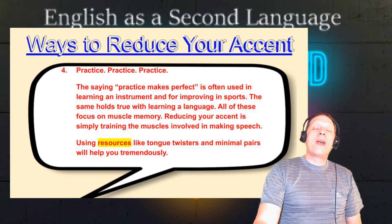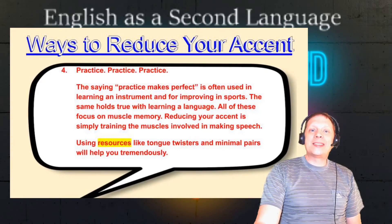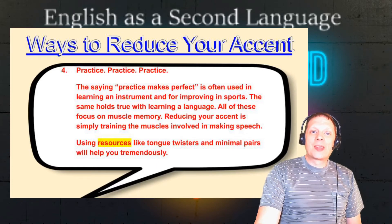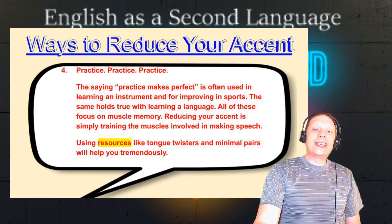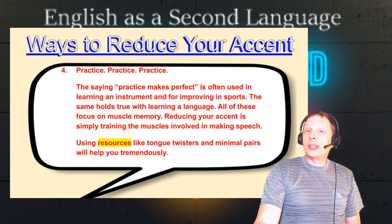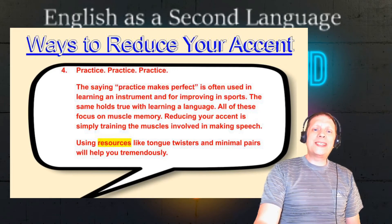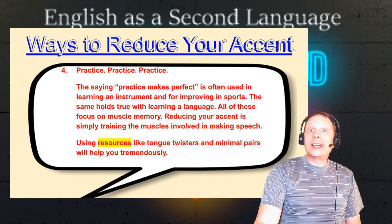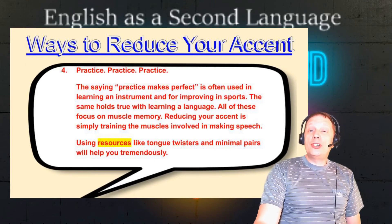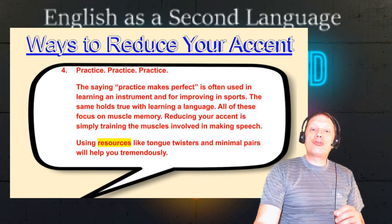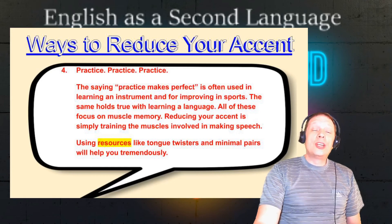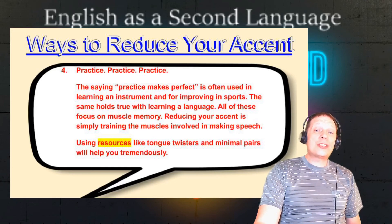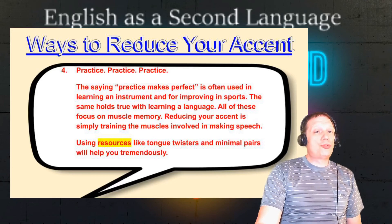Fourth tip: practice, practice, practice. The saying "practice makes perfect" is often used in learning an instrument and for improving in sports. The same holds true with learning a language. All of these focus on muscle memory. Reducing your accent is simply training the muscles involved in making speech. Using resources like tongue twisters and minimal pairs will help you tremendously.